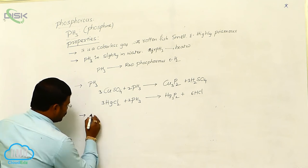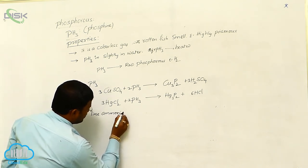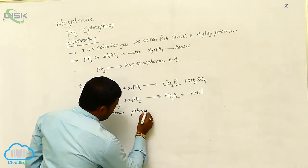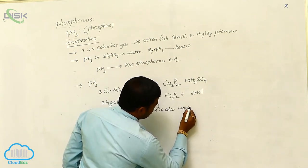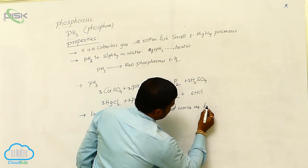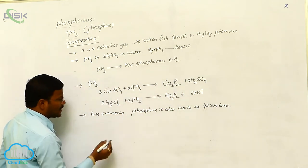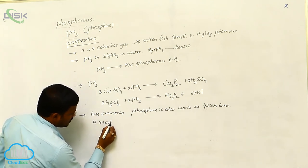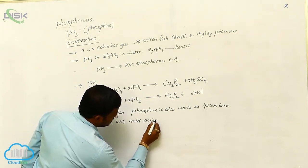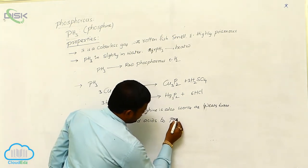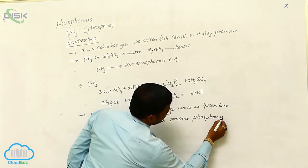Also, due to presence of or like ammonia, phosphine is also works as base. Which base? Weak base. Due to weak base character, it reacts with mild acids to produce phosphonium salts.